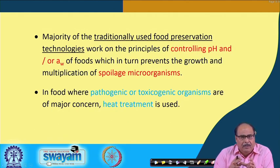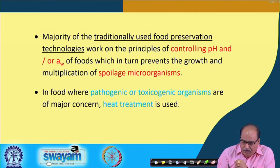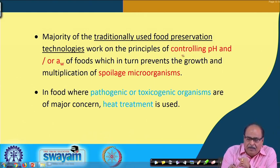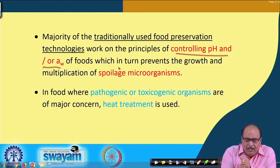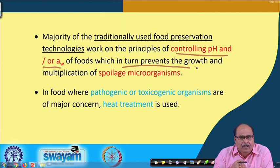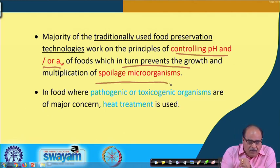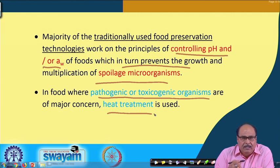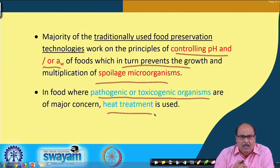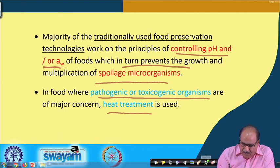In summary, the majority of traditionally used food preservation technologies work on the principles of controlling the pH and water activity of the food, which in turn prevents the growth and multiplication of spoilage microorganisms. In other instances where pathogenic or toxic microorganisms are of concern, heat treatment is used. Let us now see in a little detail how control of pH and water activity influences microbial growth, and what the mechanism is by which changing the pH reduces or eliminates microbial growth.